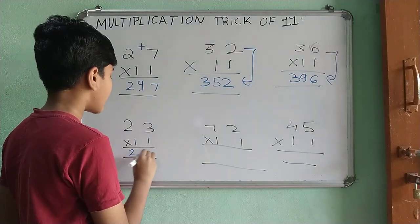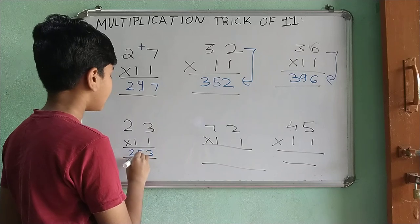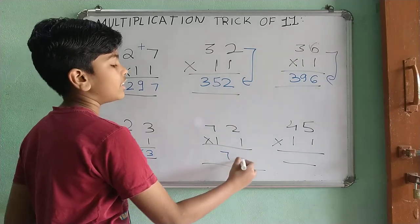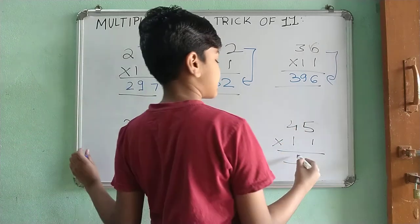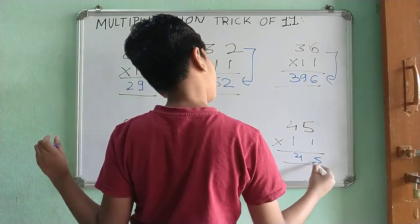This answer is 23 as it is. Add 253. 72 as it is. Add 792. 45 as it is. Add 495.